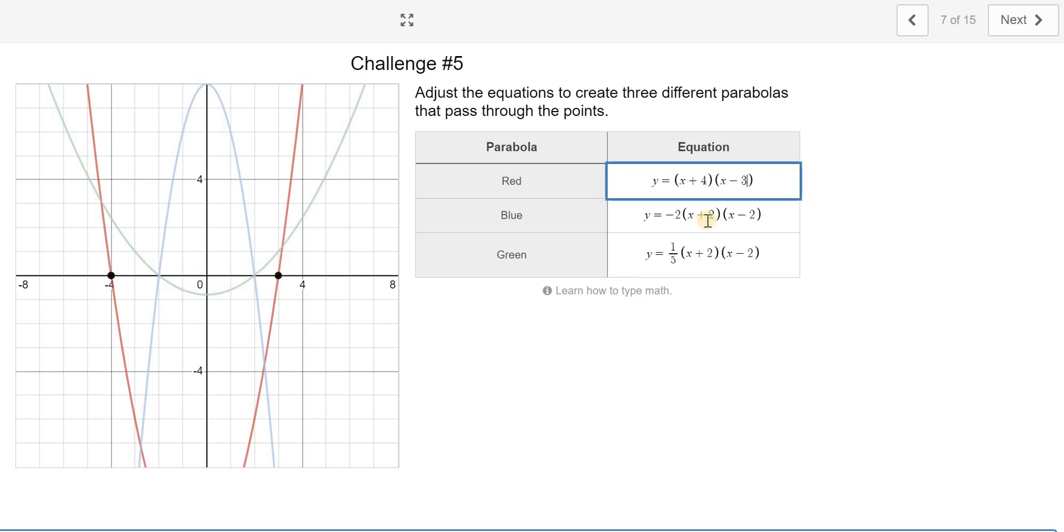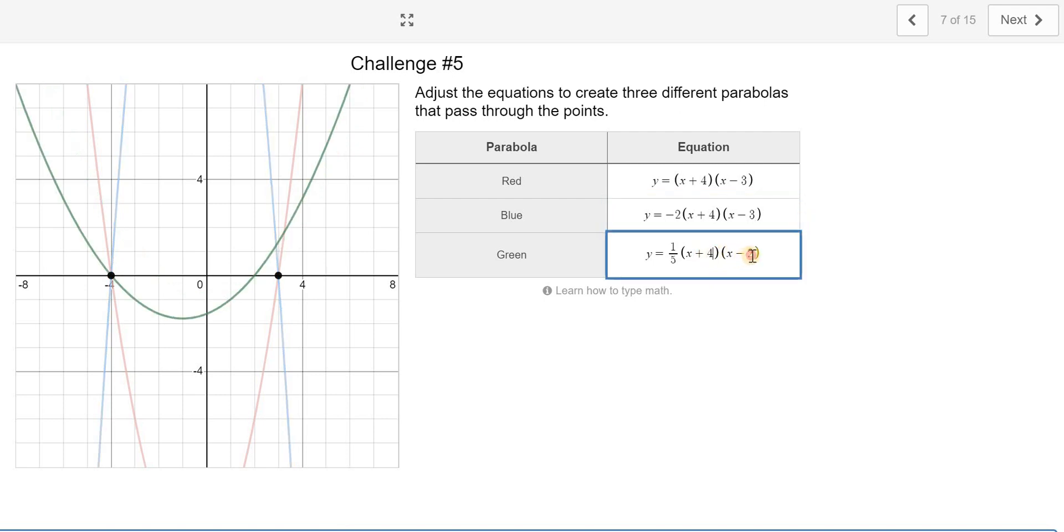So to do the blue one, I want the x-intercept to be these black dots. So that's at negative 4 and positive 3. So in here, I'm going to do positive 4 and negative 3. And we'll just make it go through there. So this is actually called x-intercept form, and we will continue to learn more about this later.